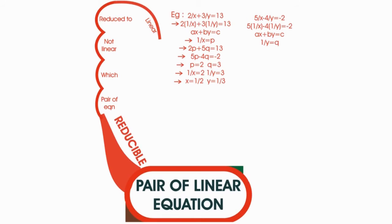Let us see our last branch. It is about the reducible method of pair of linear equations in two variables. Here, the solution of pair of linear equations which are not linear but can be reducible to linear form by making suitable substitutions.